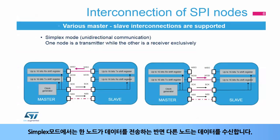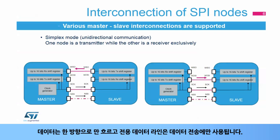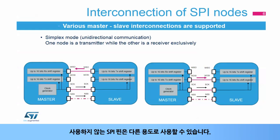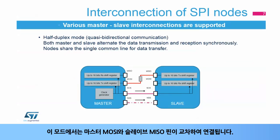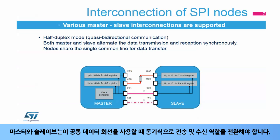In simplex mode, one node transmits data while the other receives it. Data flows in one direction only, and the dedicated data line is used for data transfers exclusively. Unused SPI pins can be used for other purposes. Half duplex mode integrates the two modes by sharing a single line for data exchanges, and data flows in only one direction at a single time. There is a cross-connection between the master MOSI and the slave MISO pins in this mode.